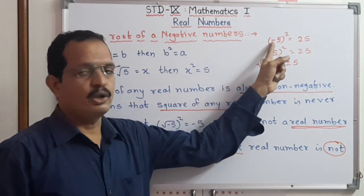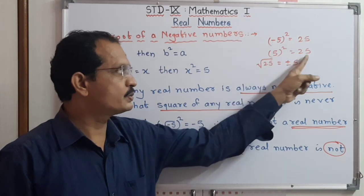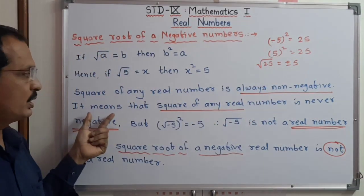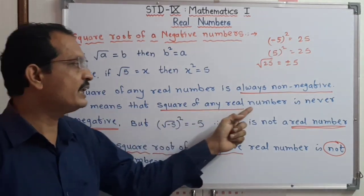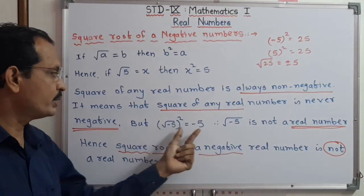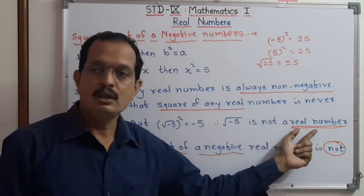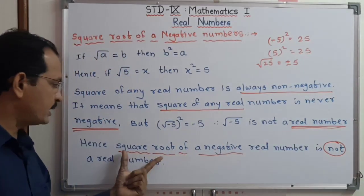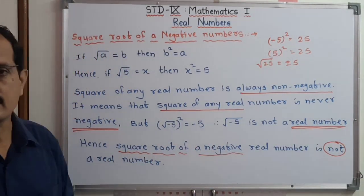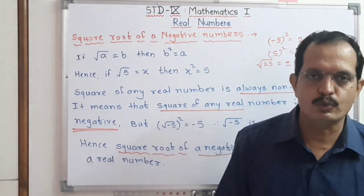So you can understand this: the square of minus 5 is 25 and the square of 5 is 25, meaning the square of any real number is a non-negative number and is never negative. In this case, the square root of minus 5 is not a real number. Therefore we say that the square root of a negative number is not a real number. Now dear students, we have to start with practice set 2.2, question number one.